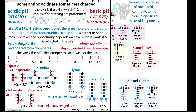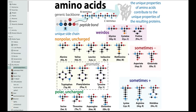On the opposite end, you have aspartate and glutamate, which are sometimes negatively charged. At a higher pH, they're more likely to be negatively charged because there aren't many protons around. You can think of them as wanting to donate - if there's a lot of protons, you'll take them up, but if there's not a lot, you want to donate. Whether and when this happens is determined by something called the pKa. There are only these five amino acids that actually have these charge-based properties.